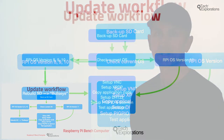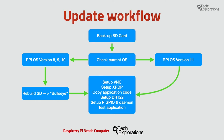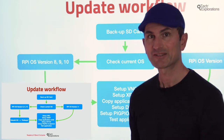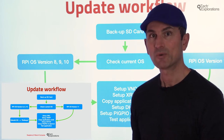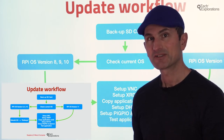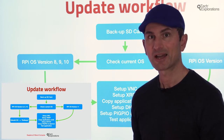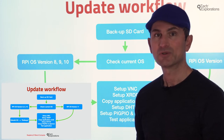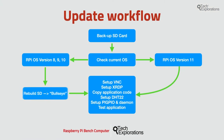Here's the update workflow I'll be following in this section. First, back up your SD card unless you are using a brand new card, and remember to take backups as you progress so you can roll back to a previous state if something goes wrong. Next, check which version of the Raspberry Pi operating system you are using. If you are using Raspberry Pi OS version 8, 9, or 10, you'll need to upgrade your SD card to version 11 Bullseye.